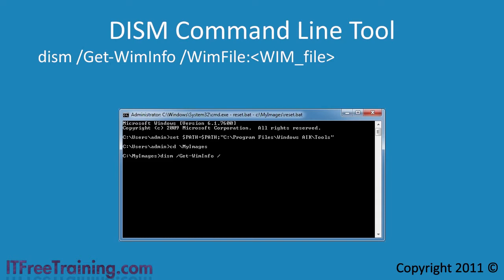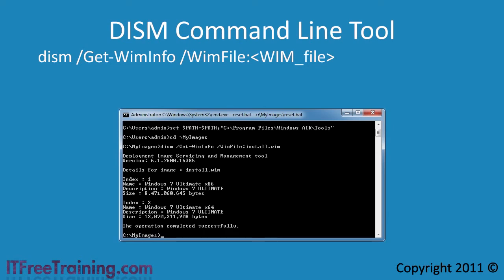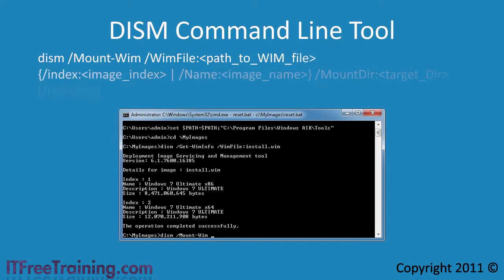Next I need to specify the file location with the WIM file switch to select an image. In this WIM file there are two images — both are Windows 7 Ultimate, but one is for 32-bit and the other is for 64-bit. Before I can make changes to an image I need to mount it. To mount the image I use the switch mount-WIM. Next I need to enter in the file name of the WIM file and finally the index. In this case I want the 64-bit image so I will enter in the index number of 2. You could also enter in the image name here but it is generally easier to enter the index number.